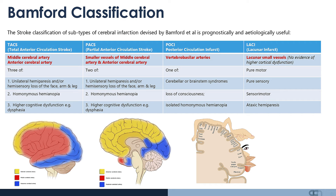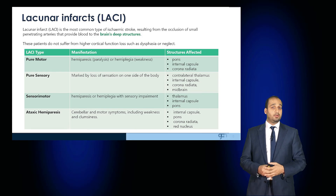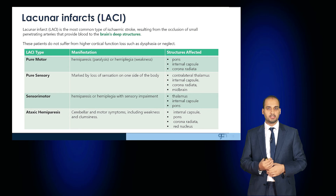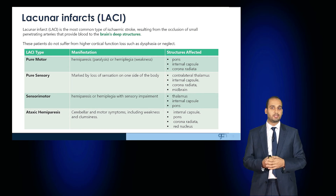In a partial anterior circulation stroke, the smaller vessels of the middle and anterior cerebral arteries are affected and you're likely to have two of those three criteria — either unilateral hemiparesis, homonymous hemianopia, or higher cognitive dysfunction. A posterior circulation infarct is where the vertebrobasilar arteries are affected, leading to cerebellar or brainstem syndromes, loss of consciousness, or an isolated homonymous hemianopia. With lacunar infarcts, small lacunar vessels are affected and there is no higher cortical dysfunction — no dysphasia or neglect.